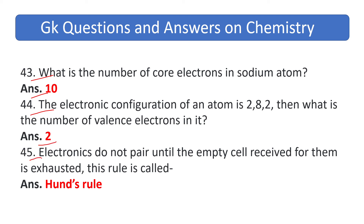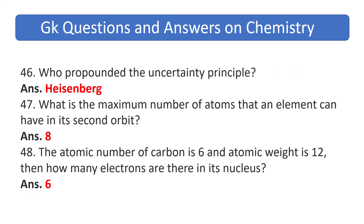Electrons do not pair until all empty orbitals available to them are exhausted — this rule is called Hund's rule. Who propounded the uncertainty principle? The answer is Heisenberg. What is the maximum number of electrons that an element can have in its second orbit? The answer is 8. The atomic number of carbon is 6 and atomic weight is 12, so how many neutrons are there in its nucleus? The answer is 6.